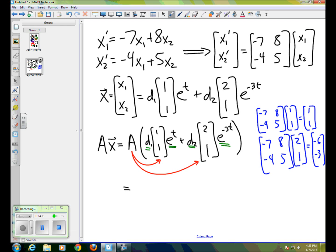Okay, so the result of this, A times X turns out to be D1 times 1, 1, e to the t plus D2 times negative 6, negative 3, e to the minus 3t, and you can see that we can take a scalar of negative 3 out of that second vector, and so we get D1 times 1, 1, e to the t minus 3d2 times 2, 1, e to the minus 3t. So that's A times X.